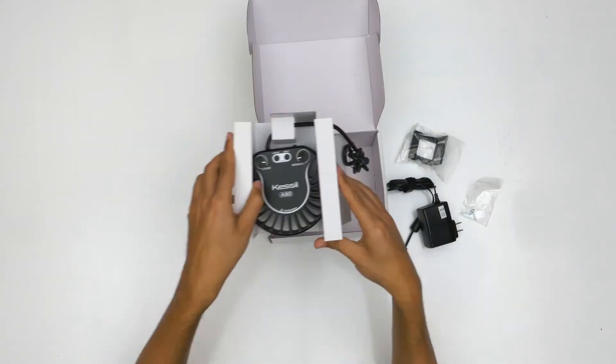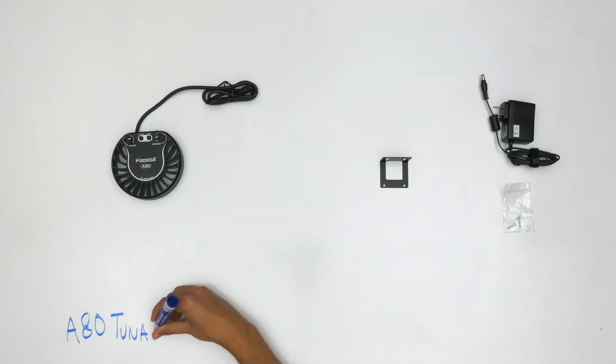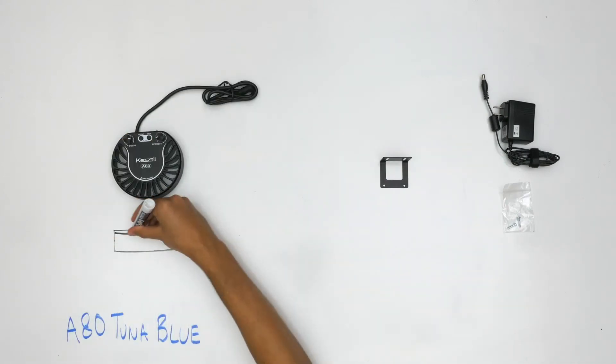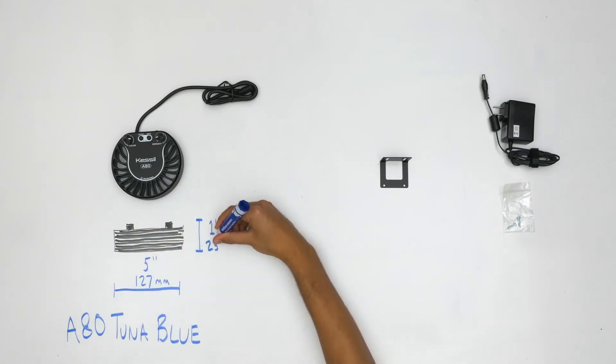The A80 Tuna Blue includes the following components. The light unit features Daikon's dense matrix LED array and Kessel logic technology in our smallest, most lightweight design. The A80 is 5 inches wide and just 1 inch tall, and weighs less than 1 pound.